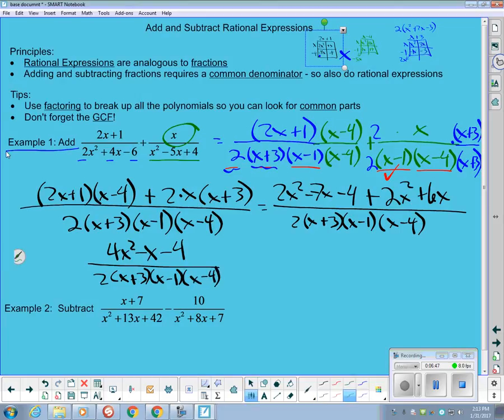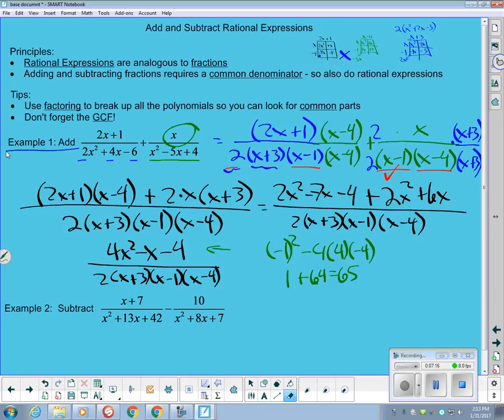If I check my quadratic in the numerator here with the discriminant, the b squared, which is going to be 1 minus 4 times a times c, I get 1 plus 64, which is 65, which is at least a real number, but it's not one that will factor since 65 doesn't have a nice square root for me.